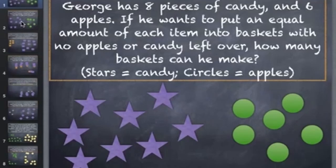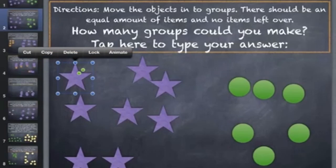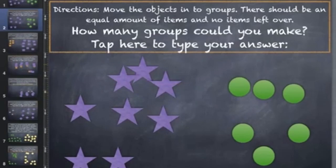Now go ahead and click on slide two. You'll see that our picture is the same, and our directions are up here at the top. The directions say, move the objects into groups. There should be an equal amount of items and no items left over. How many groups could you make? Again, we're going to do this one together. To move objects around in Keynote, tap the star so it's highlighted, and then you can drag it around.